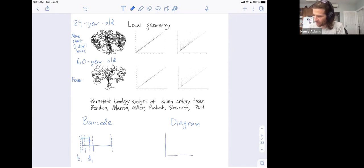In a diagram, you take each bar and you plot it as a point in the plane. Okay, so this bar that has birth b1 and death d1, we're going to plot that as this point in the plane. And then this bar is born slightly later and dies slightly later. So its x coordinate is slightly larger, and its y coordinate death is slightly larger.